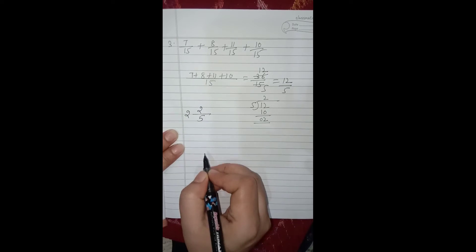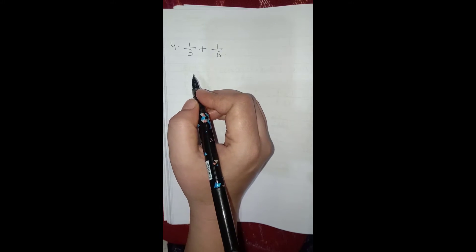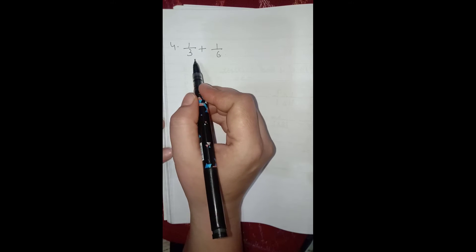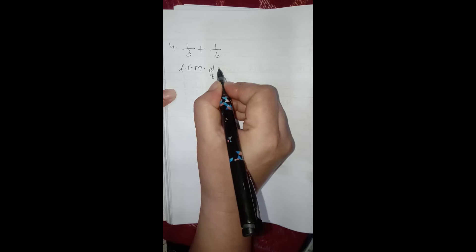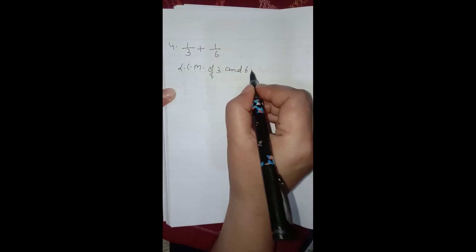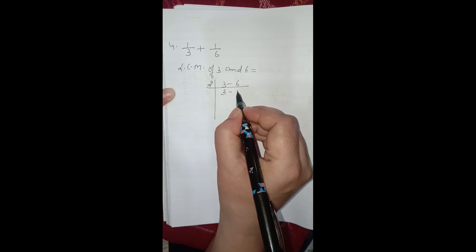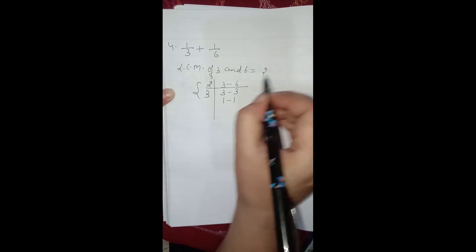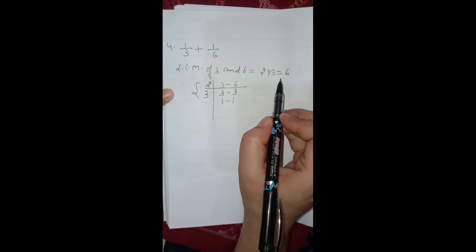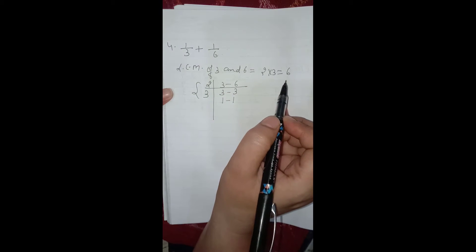Since 12/5 is improper, we divide: 5 × 2 = 10, remainder 2. So the answer in mixed numbers is 2 and 2/5. Now part 4: 1/3 + 1/6. The denominators are different, so we need to take the LCM. LCM of 3 and 6: we take the smallest prime 2, giving 2 × 3 = 6. So the LCM is 6.